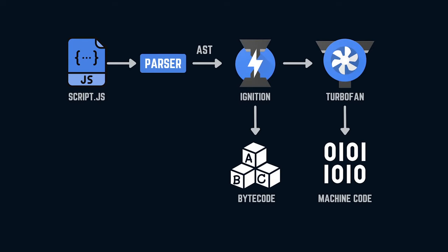First of all, here we have the major components in the V8 engine and the picture shows how they process a JavaScript file. We have a parser, which is the first step in translating any human-readable program to lower-level or machine-readable code. The main objective of a parser is to check whether the program is written according to JavaScript language syntax rules.